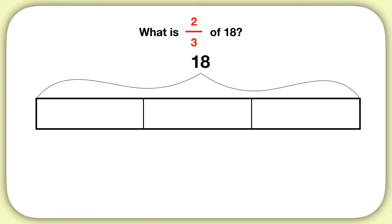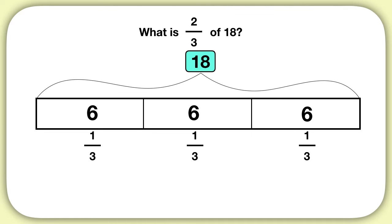When I do that, each piece will be one-third of the total. Now, if the whole bar is eighteen, how much will be in each piece? When you split eighteen into one, two, three sections, you'll have six in each section. So one-third of eighteen is six. But we need to figure out what is two-thirds of eighteen. Here are two-thirds of eighteen. What is the total of these shaded pieces? These pieces together are twelve. So two-thirds of eighteen is twelve.